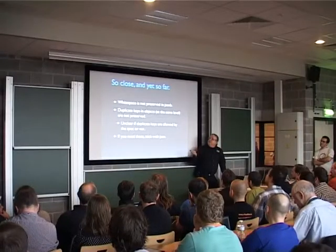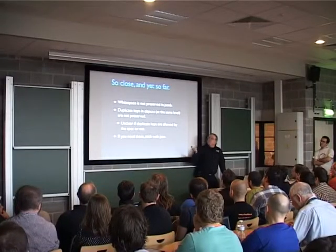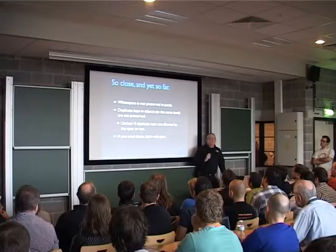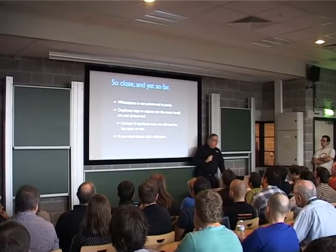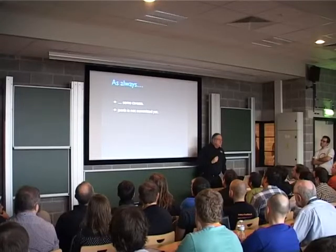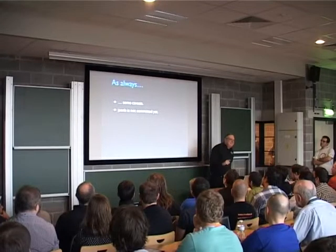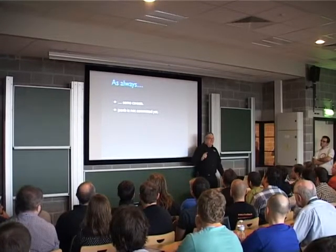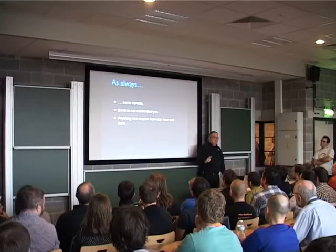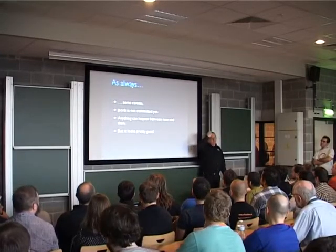So if you need white space preservation or duplicate keys at the same level, you'll need to stick with the JSON type. As always, some caveats: it's not committed yet. Until it's committed it's not real, and anything can happen between now and then. But it looks frequent — it will probably be in 9.4.